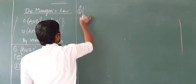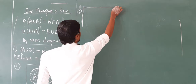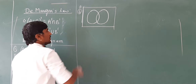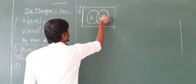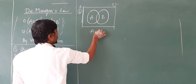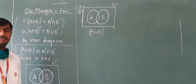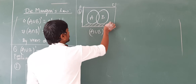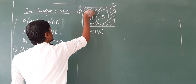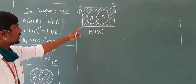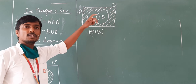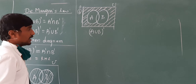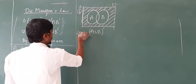Now for the second diagram, this is set A and this is set B, and this is our total set U. What we need is (A∪B)' — we are collecting elements from U that are not present in A∪B. So the complement means elements that are represented in U but not in A∪B. This is our LHS part.